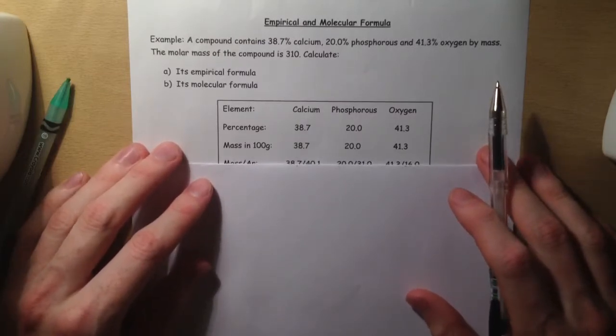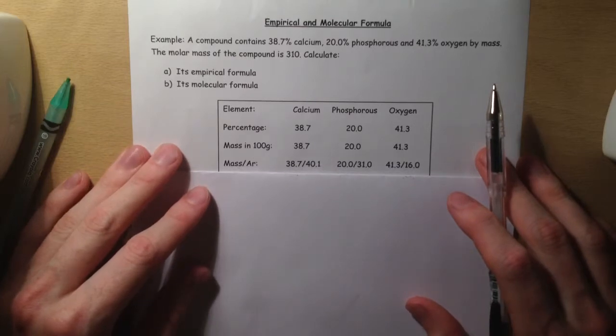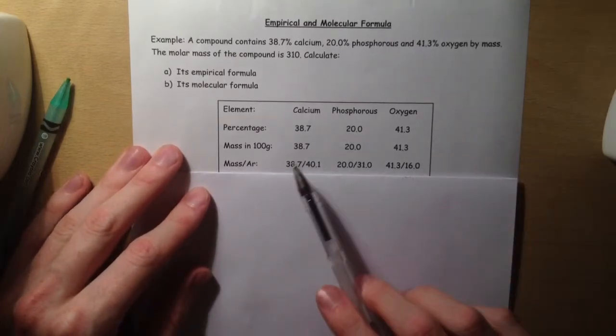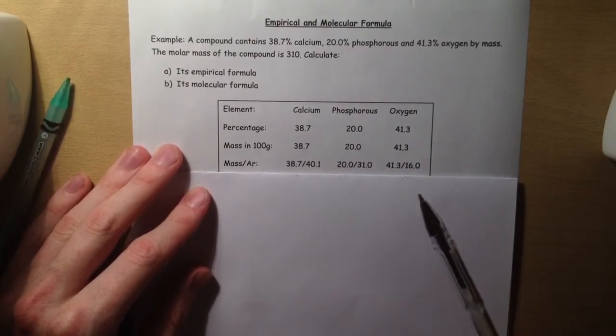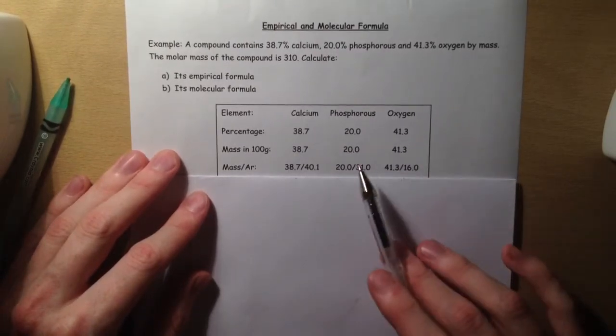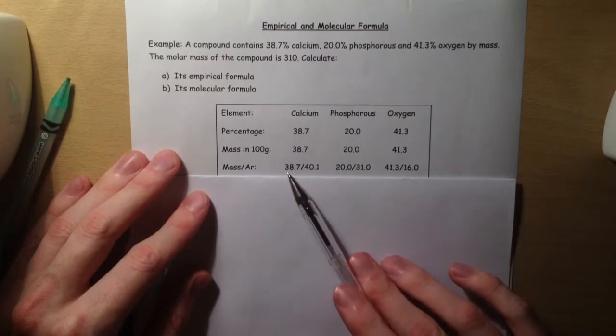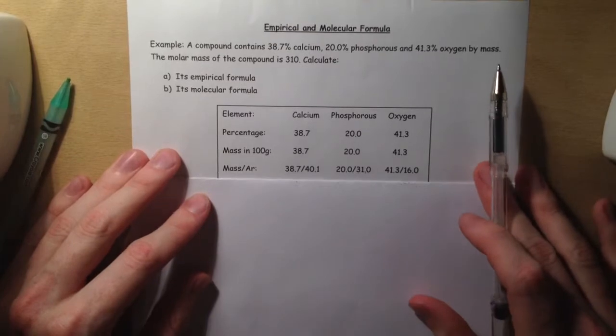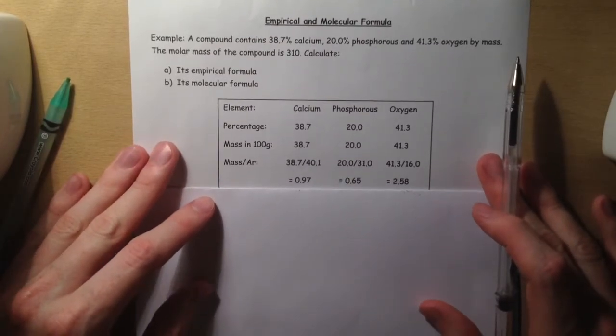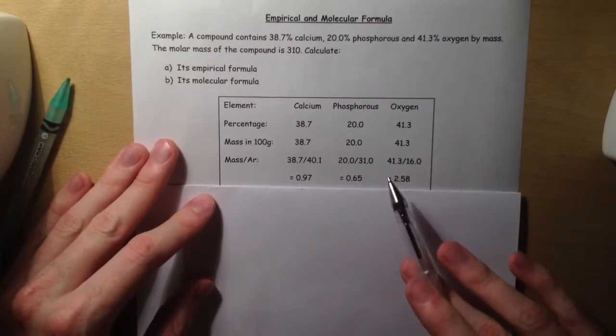The next thing we're going to do is divide the mass by the relative atomic mass for each of these things. Calcium is 40.1, phosphorus is 31.0, and oxygen is 16.0. You can find those in your periodic tables. If we divide each of these masses by their relative atomic mass, we get these values here.